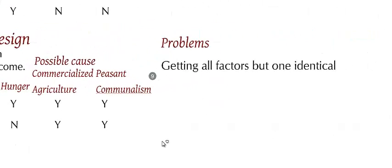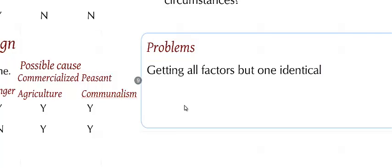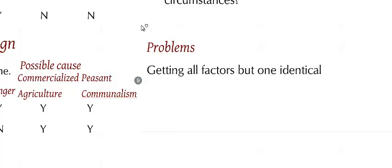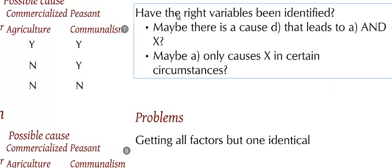Now, like in the other system design, there could be some problems with this. For instance, and this is the classical one, finding cases that are so similar to each other. To get all factors but one identical is really, really difficult. And this taps back into the discussion for the most different system design: have the right variables been identified?